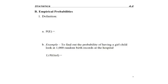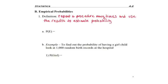A second way of finding probability is to use the empirical method. The definition of the empirical method is you repeat a procedure many times and use the results to estimate probability.